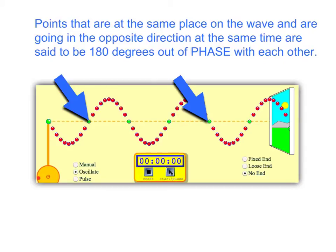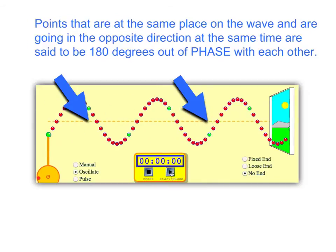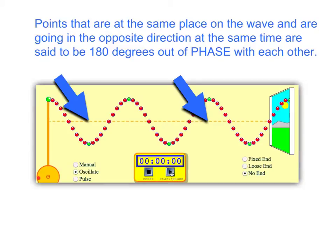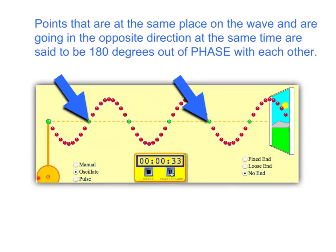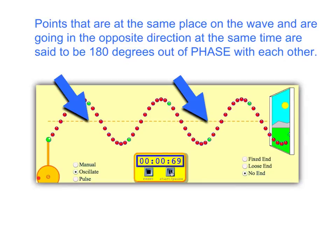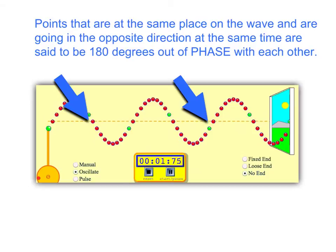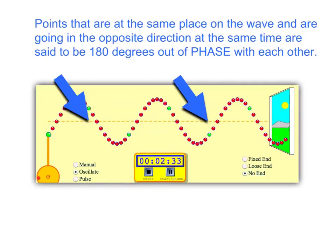Points that are at the same place on the wave but are going in the opposite direction at the same time are said to be 180 degrees out of phase with each other. As we watch these two green dots, as one goes up the other goes down, and vice versa. So these two green dots are moving in opposite directions at the same time — they are 180 degrees out of phase.